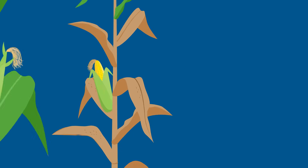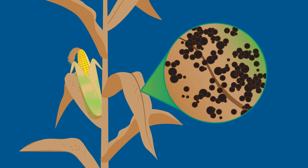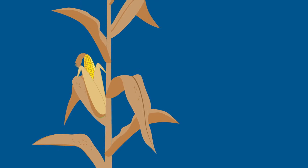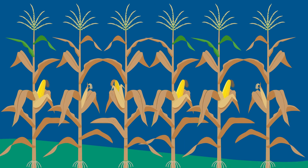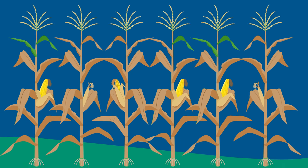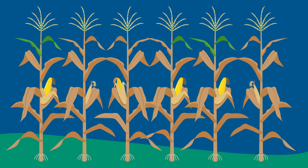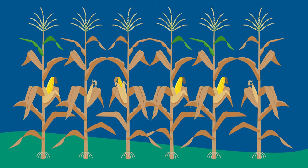Look for the raised bumps on corn leaves that resemble spots of tar and do not rub off. Spots form on the lower corn leaf and move up to the upper plant and ear husks as the infection spreads.